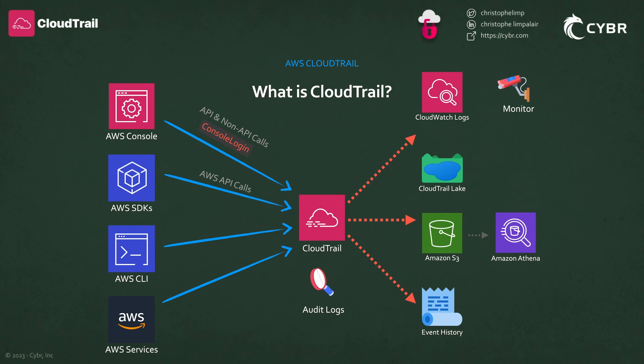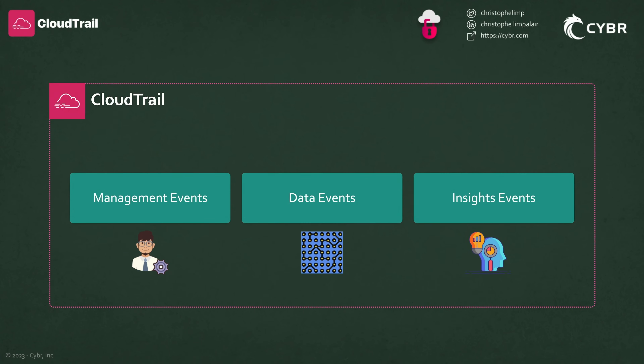This course is designed for anyone, regardless of current skill level, to be able to walk away with a thorough understanding of what CloudTrail is, how it can be used, and how you should configure it to get maximum observability in your AWS environments depending on your specific use case. We start off by explaining what data CloudTrail is able to collect and log, depending on how it's configured.